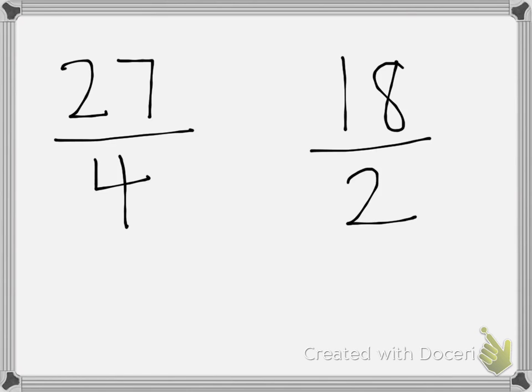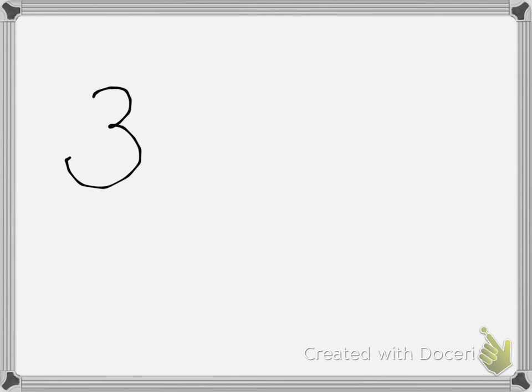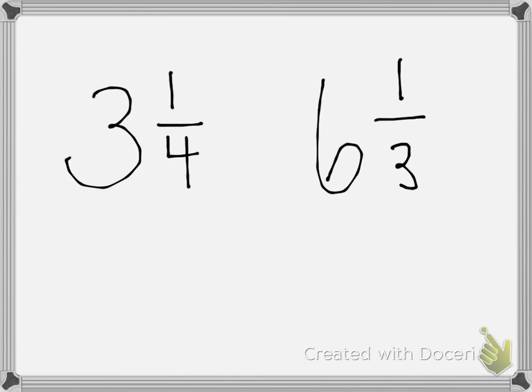A mixed number is a mix of a whole number and a fraction — that's why they call it a mixed number. So it has a whole number such as 3 and a fraction such as one fourth. The whole number is 3 and the fraction is one fourth. Another example of a mixed number is 6 and one third — the whole number is 6 and the fraction is one third.